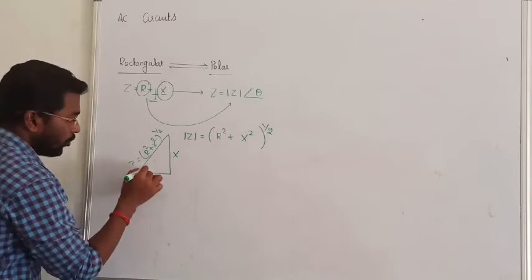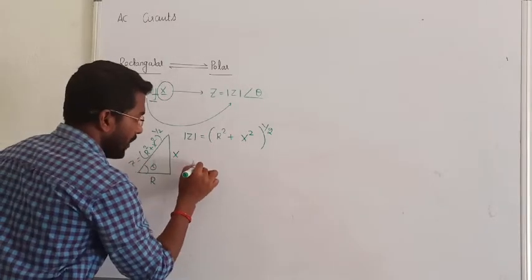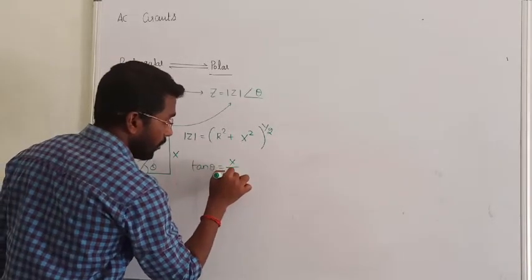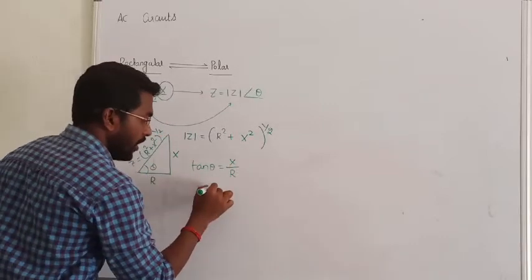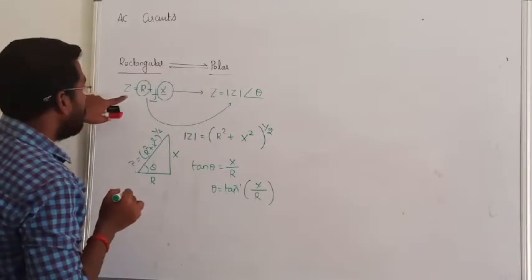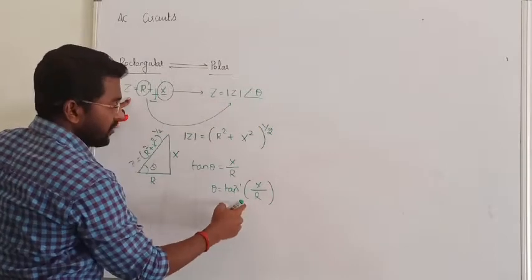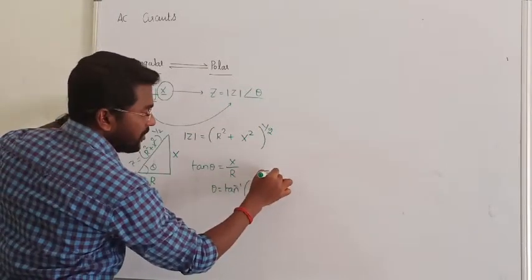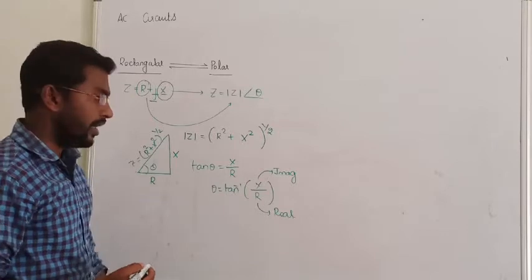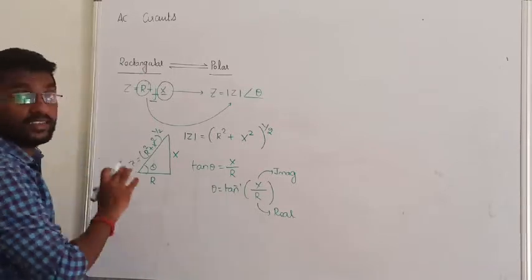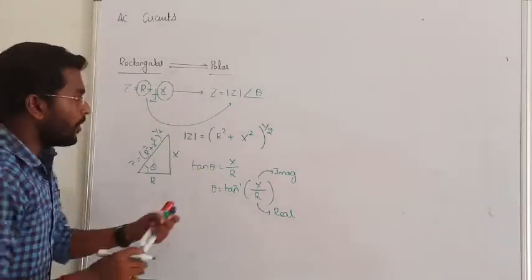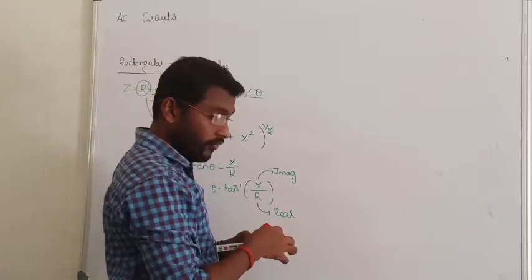At the same time, I would like to know the value of theta, the impedance angle. So for this, I am taking tan theta. When you write tan theta, that is sin theta by cos theta, or we can say that is going to be X by R. From this, theta will become tan inverse of X by R.